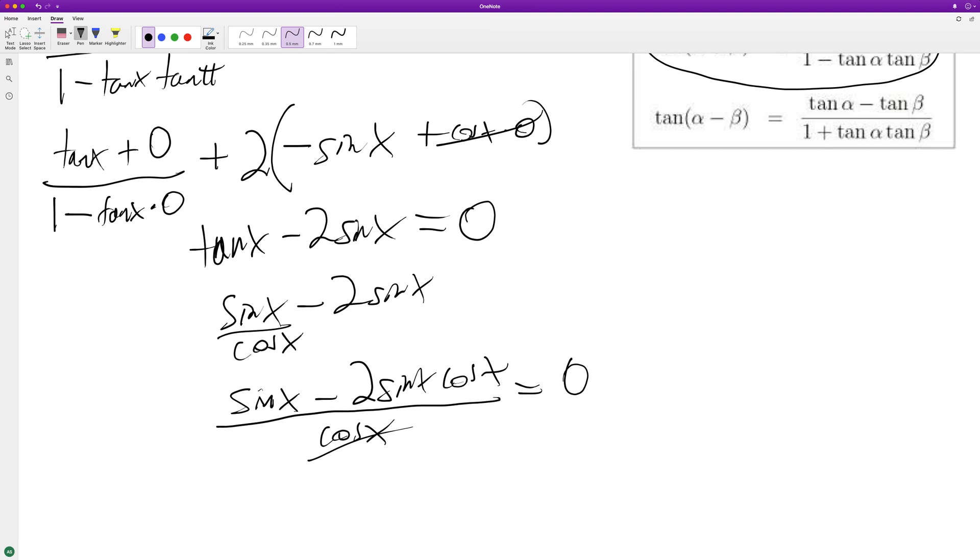I guess we can multiply by cosine of x, so we'll end up with sine of x times 1 minus 2 cosine of x equals 0.